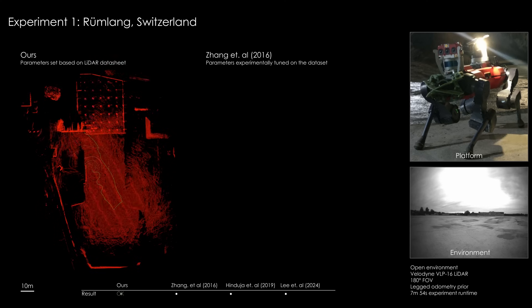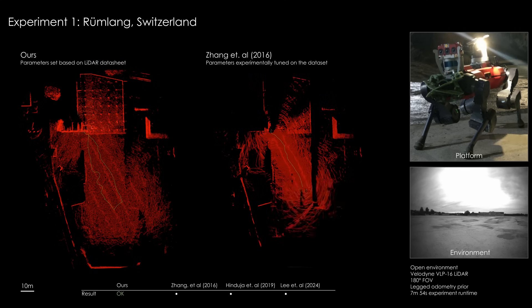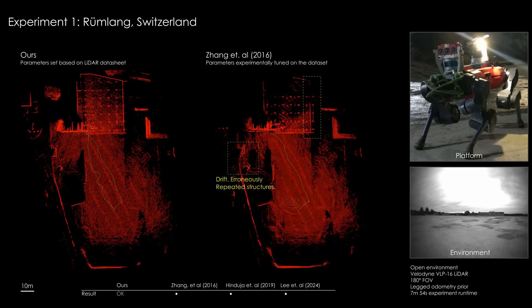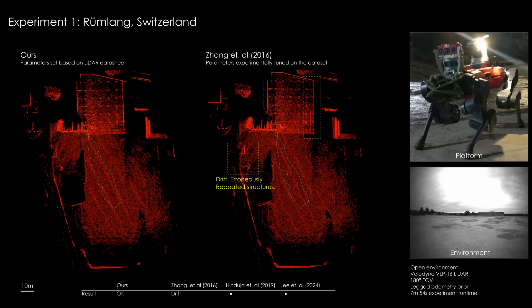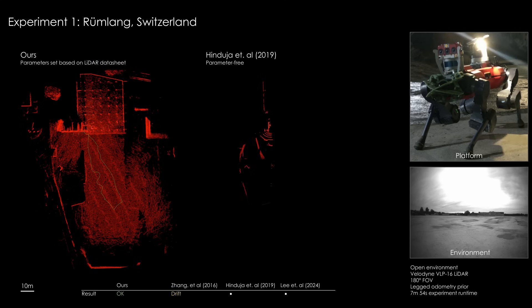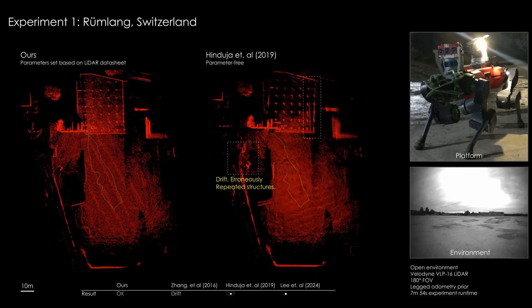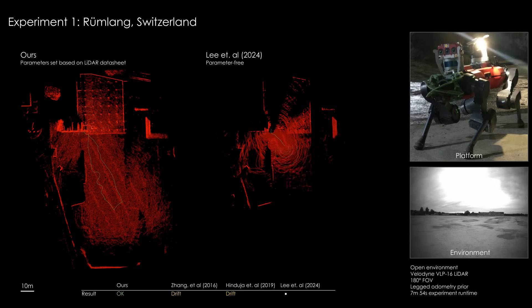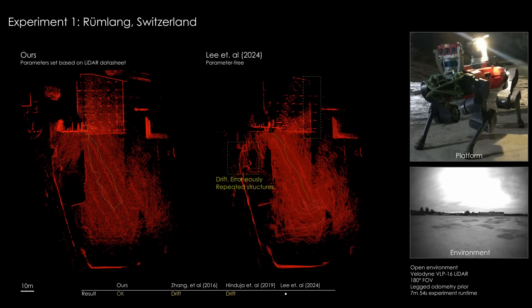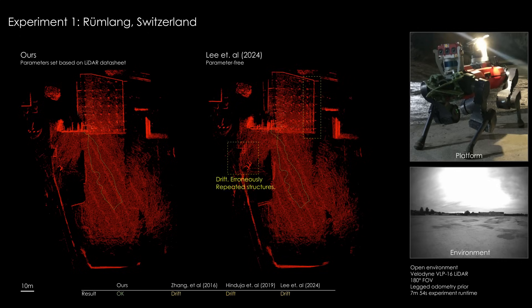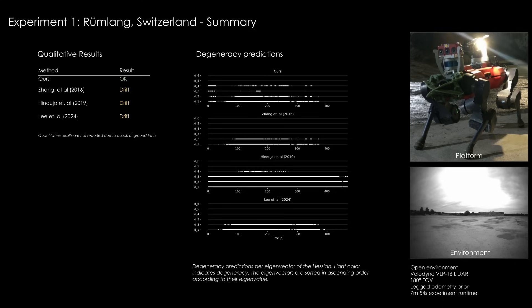In the first experiment, we compare our method to the baselines in a large open area. The AniBotics robot enters the area and rotates in place. The field of view of the Velodyne VLP-16 LiDAR is reduced to 180 degrees to increase the difficulty. The baseline methods yield drift in the map, while our method does not.